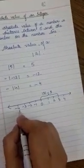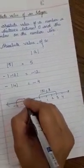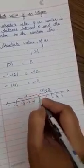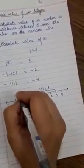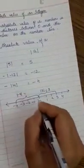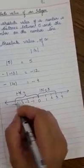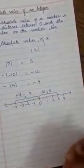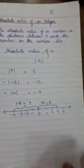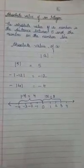Suppose we have to find out the absolute value of minus 4. We will count the distance from 0 to minus 4. The absolute value of minus 4 will be 0, 1, 2, 3 and 4. So the answer is 4. In this way we can easily find out the absolute value of any given number.